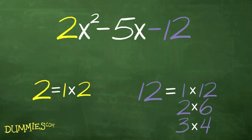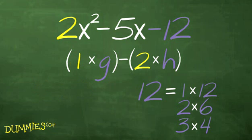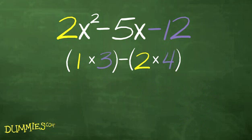Remember to look at the sign of c and your lists from steps 1 and 2. The third step is to choose a product from step 1 and a product from step 2. In this example, c is negative 12 and b is 5. So look for a combination from step 1 and step 2 whose difference results in 5. Use the 1 times 2 from step 1 and the 3 times 4 from step 2.